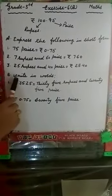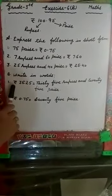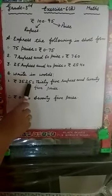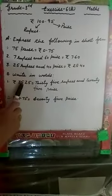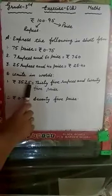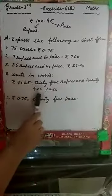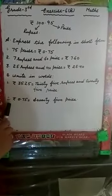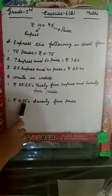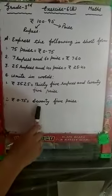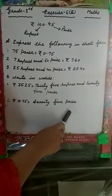The second part of this exercise is to write in words. Words means write it in English. First question: rupees 35.25. Since the left side represents rupees and the right side of the decimal represents paise, we write it as 35 rupees and 25 paise. Second part: rupees 0.75. Here the rupees are 0, and on the right side of the decimal is 75, which are paise. So we write it as 75 paise. Solve this whole exercise in your book with neat and clean handwriting.